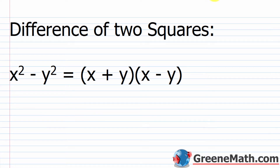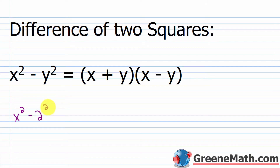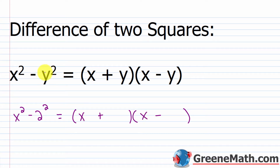For example, take x squared minus 4. We know x squared is a perfect square, and 4 is 2 squared. So rewrite this as x squared minus 2 squared. Following the format, set up two sets of parentheses with a plus and a minus. The first thing squared — x — appears in the first position of each. The second thing squared — 2 — appears in the second position of each. So this factors as the quantity x plus 2 times the quantity x minus 2.